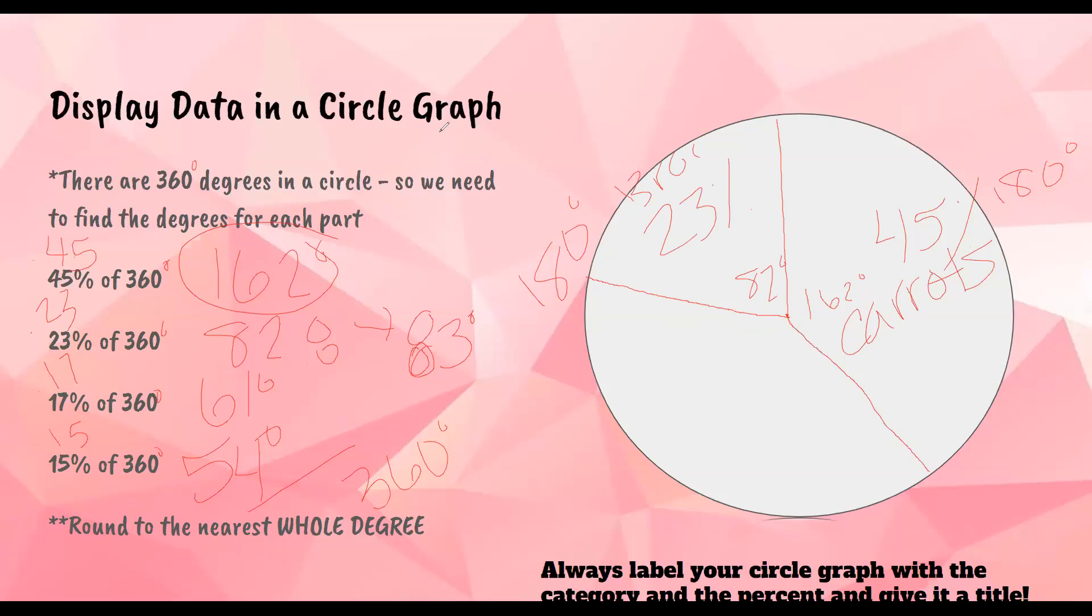Then I have 61 degrees and then 54 degrees which they're pretty close to each other. So I'm kind of just gonna eyeball it and make one section of this a little bit bigger than the other section. So this section can be my 61 degrees or my 17 percent. I think this was beans. And then this can be my 54 degrees which was my 15 percent of other.